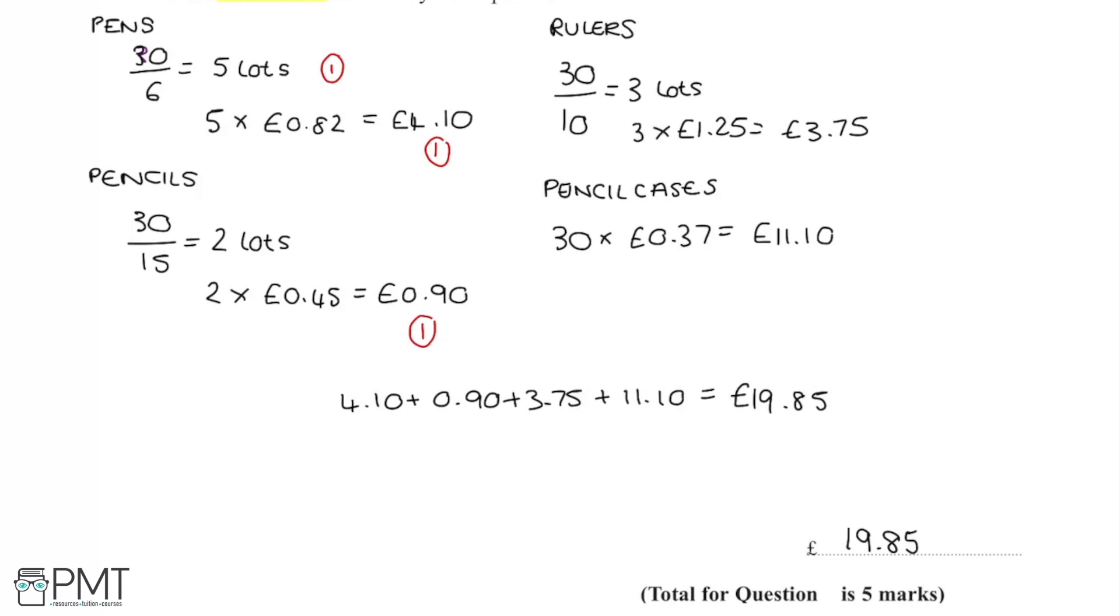And the fourth mark is for adding at least three different costs together. So in this step here we added all four costs together, but adding at least three would gain me a mark. And then finally the fifth final mark is going to be for the correct final answer here at the end.